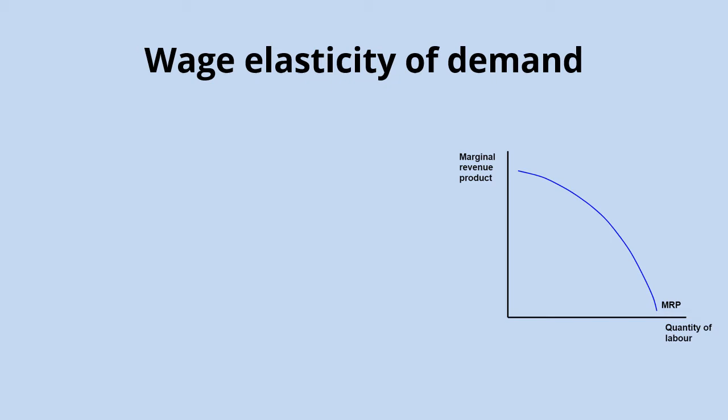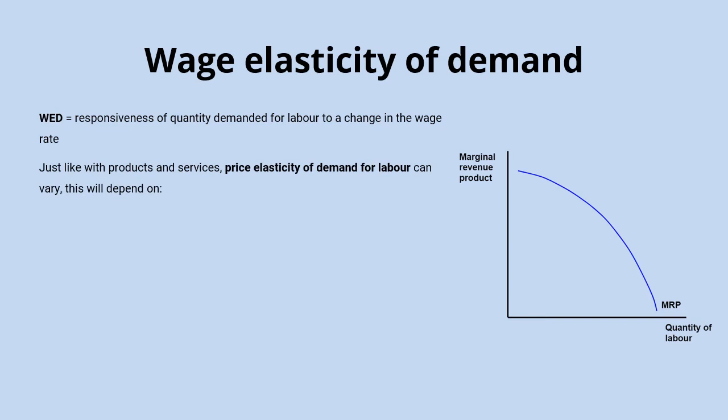The similarities continue between product markets and the market for labour, because just like we can have price elasticity of demand for products and services — price elastic or price inelastic — we can also have wage elasticity of demand for labour. The wage elasticity of demand is the responsiveness of the quantity demanded for labour to a change in the wage rate. And just like with price elasticity of demand, there are a few different factors that will affect this wage elasticity of demand.